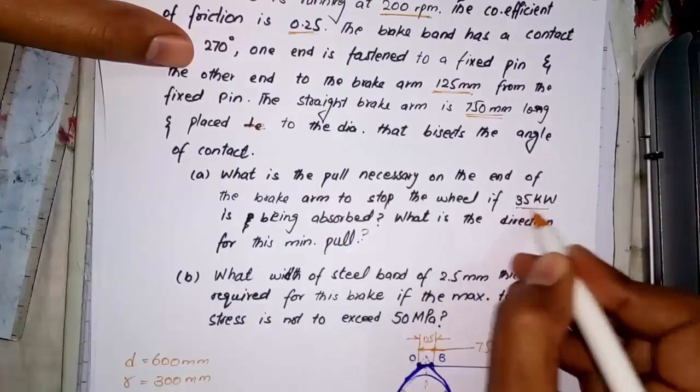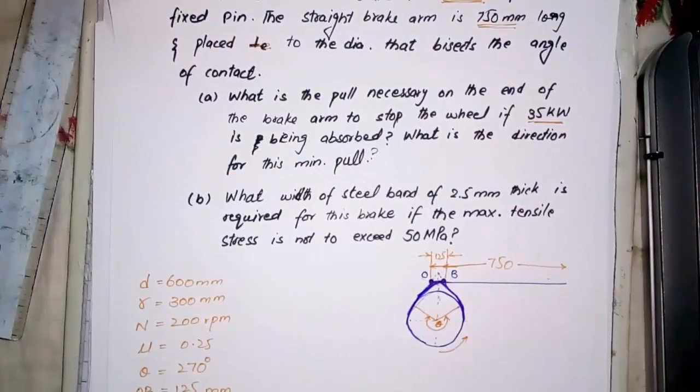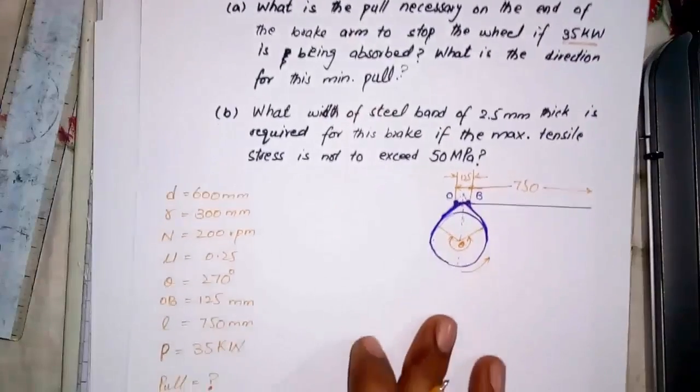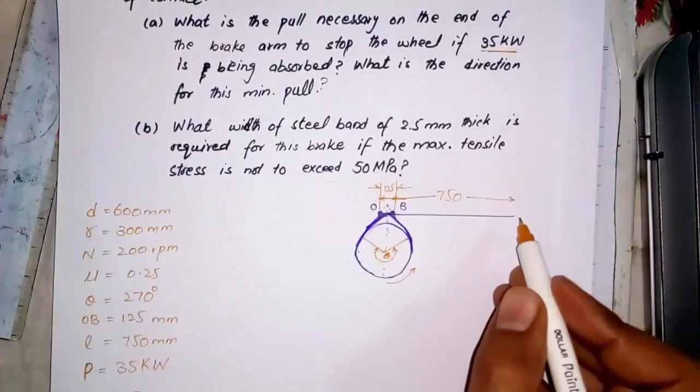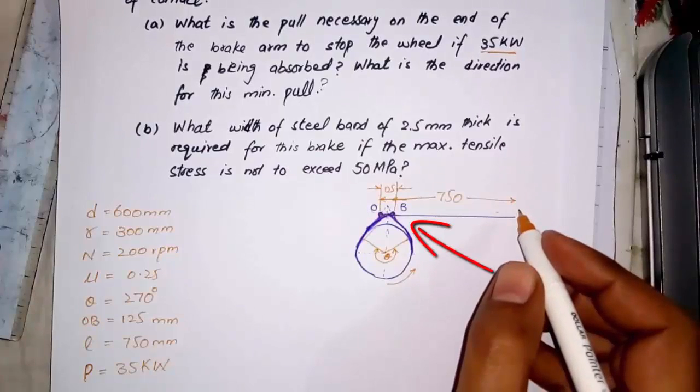This is power. In part A we have to find the pull force and in part B we have to find the band width while thickness and tensile stress is given. Due to drum's rotation this side would be tight and this side would be slack.